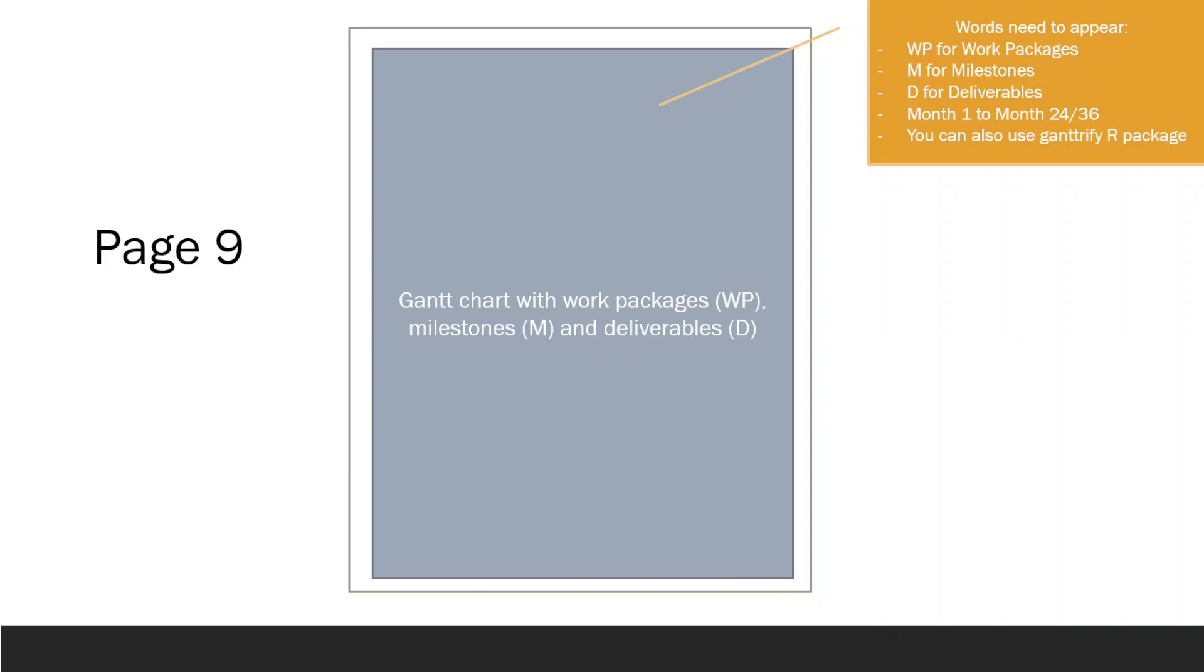Most of page 9 will likely be devoted to the Gantt Chart, which will include the Work Packages, Milestones, and Deliverables. You may need to add descriptions for specific milestones, denoted with letter M, and Deliverables, denoted with letter D, here as well, unless they are already well described in the overview. There is a useful R package called Ganttrify that can assist you in creating a Gantt Chart.